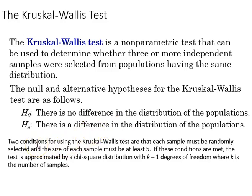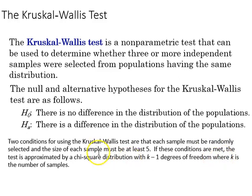There are two conditions for using this test. We do assume random selection, and the size of each sample must be at least five. When those conditions are met, the test is appropriate using a chi-square distribution with k minus one degrees of freedom, where k is the number of samples.